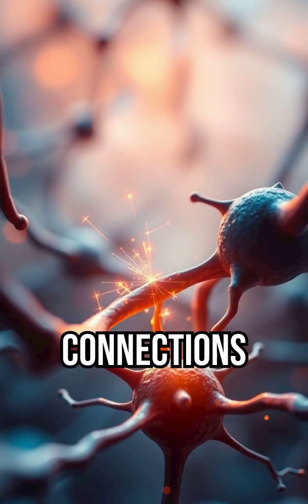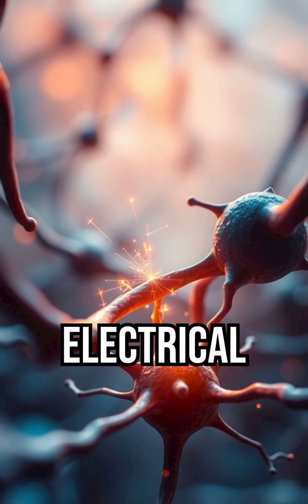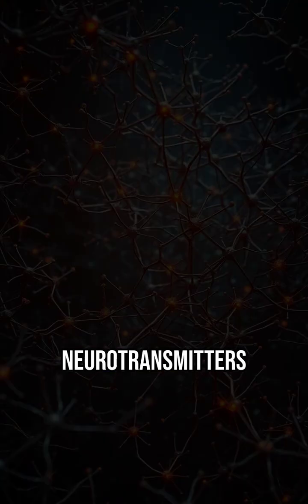Neurons talk to each other at connections called synapses, using electrical impulses and chemical messengers called neurotransmitters.